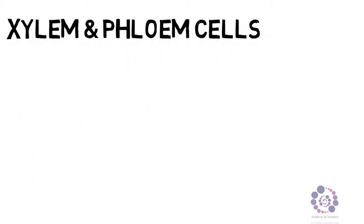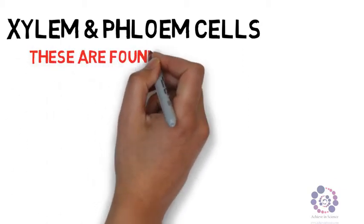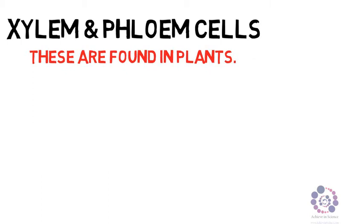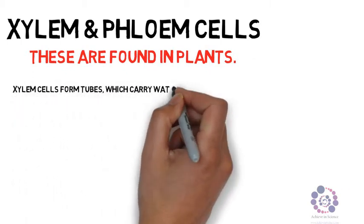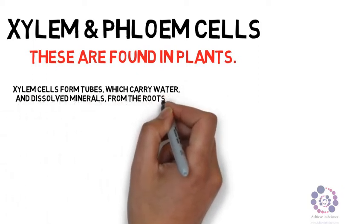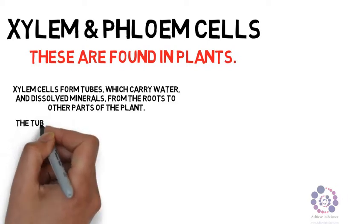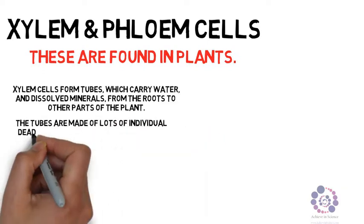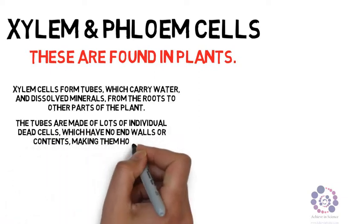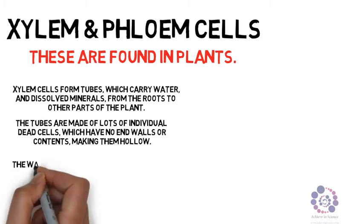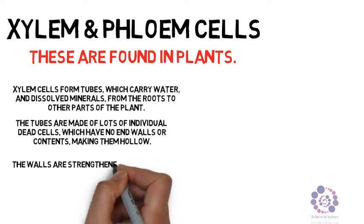Sticking with plants, we now look at the xylem and phloem — kind of like the veins and arteries within a plant, though they are different. Xylem carries water and dissolved minerals from the roots to the other parts of the plant. They are adapted by having lots of individual dead cells with no end walls, allowing them to be completely hollow. To keep their strength, the walls are strengthened by a substance called lignin.